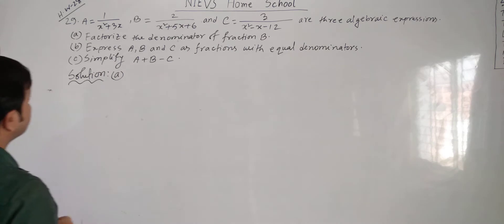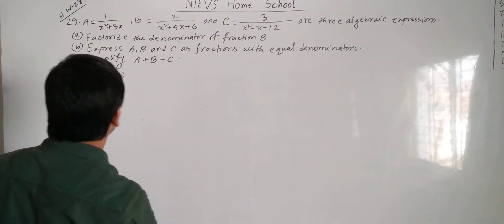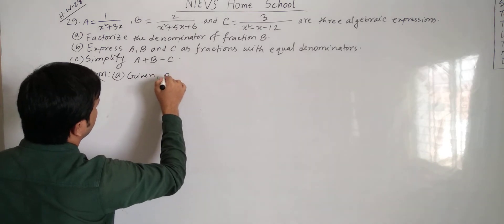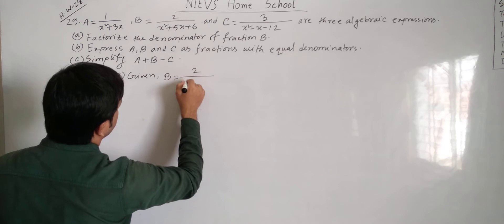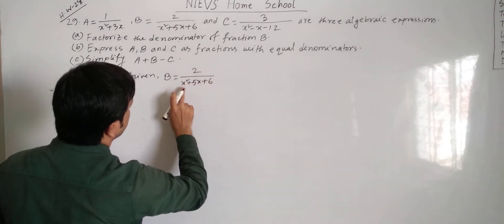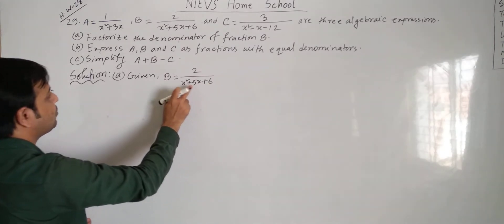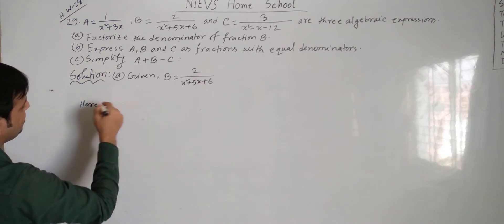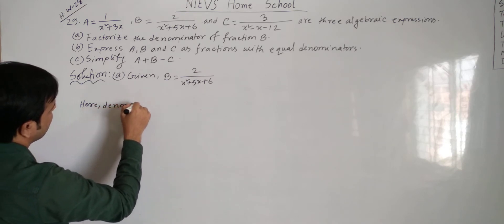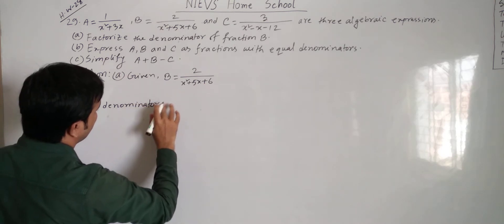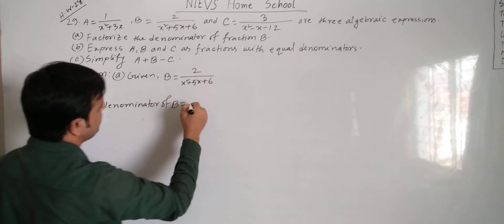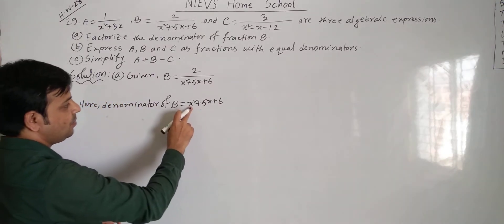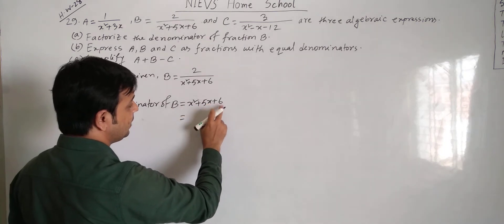Solution of question (a): Factorize the denominator of fraction b. We are given b equals 2 divided by (x² + 5x + 6). Here the denominator is x² + 5x + 6, so we have to factorize this. The denominator of b equals x² + 5x + 6. Observe that the index of x is 2 in the first term, 1 in the second term, and the last term is constant.